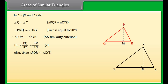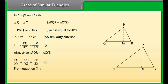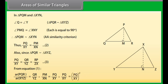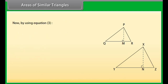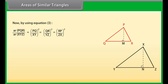Since triangle PQR is similar to triangle XYZ: PQ upon XY equals QR upon YZ equals RP upon ZX. Mark this as equation 3. From equations 1 and 2, area of triangle PQR upon area of triangle XYZ equals PQ upon XY whole square. By using equation 3, this equals QR upon YZ whole square, which equals RP upon ZX whole square.